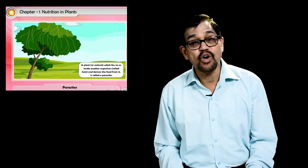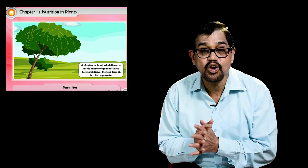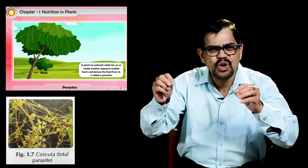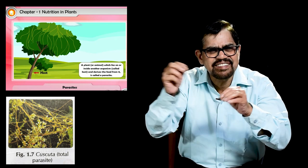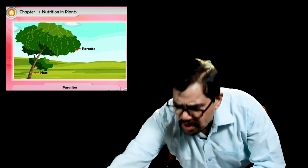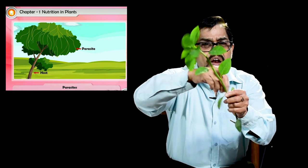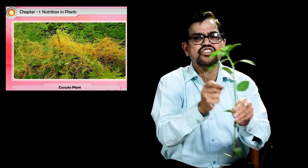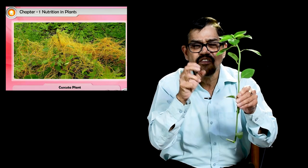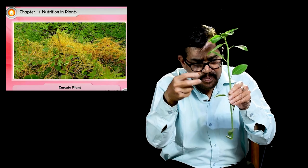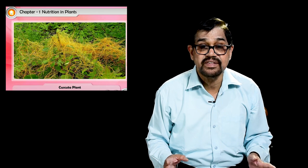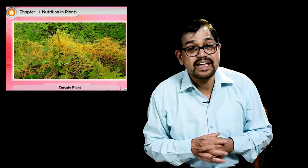The second type is parasitic mode of nutrition. Cuscuta is the best example — it is a yellow wire-like structure that winds around a host plant and sucks out nutrition from it using hook-like structures that penetrate deep into the stem. Cuscuta is a total parasite.